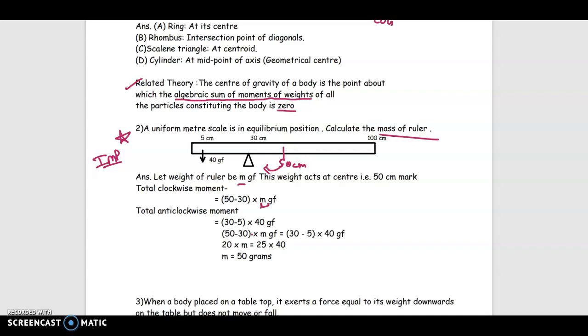Total clockwise moment will be 30 minus 5 into 40. Now we will equate total clockwise equal to total anti-clockwise. This is a formula. So the answer after calculating is 50 grams. So the mass of ruler is 50 grams.